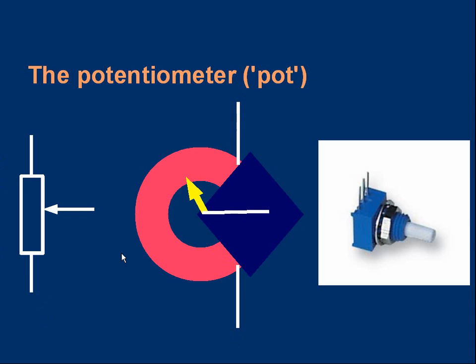The sliding contact is turned by a spindle coming out of the pot. And as you turn the spindle round, it alters the position of the contact. And that contact is connected to the middle wire here.